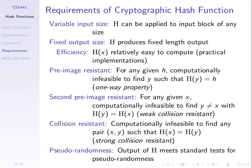The last property, collision resistant — also called strong collision resistant — is a stronger form of that. It says it should be computationally infeasible for you to choose any pair of messages x and y such that there's a collision. The difference is: the first challenge gives you a message x and asks you to find another with the same hash value; the second challenge asks you to find any two messages with the same hash value. That's why we call them weak collision resistant and strong collision resistant.